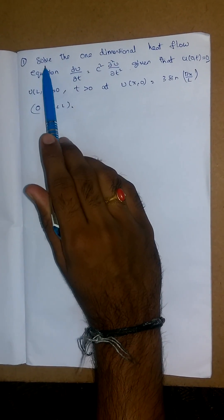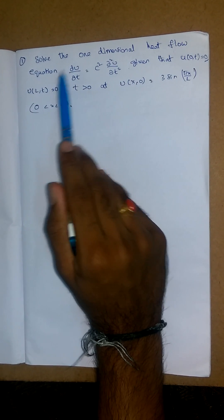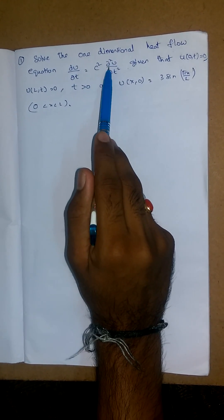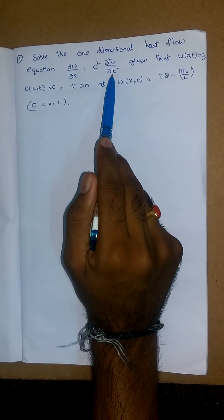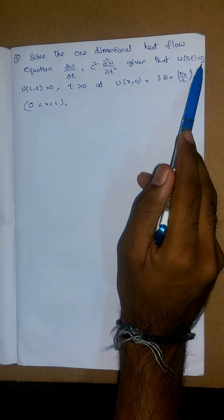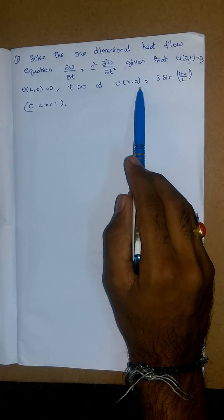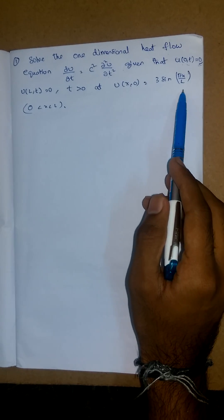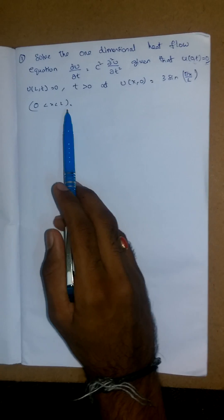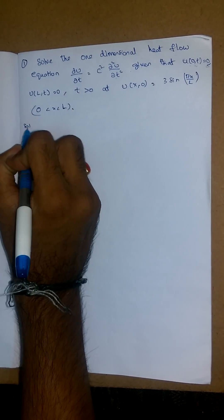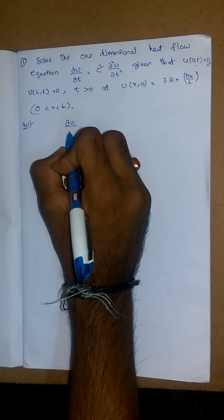Hello, today we are going to discuss a problem on the one-dimensional heat equation, which I have discussed in an earlier video. The question is: solve the one-dimensional heat flow equation ∂u/∂t = c² ∂²u/∂x², with boundary conditions u(0,t) = 0 and u(L,t) = 0 for t > 0, and initial condition u(x,0) = 3 sin(πx/L), where 0 < x < L.